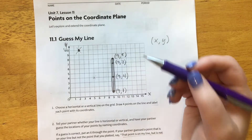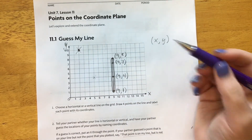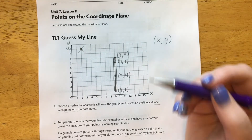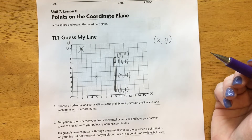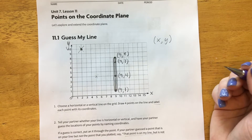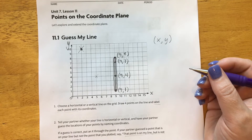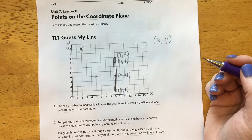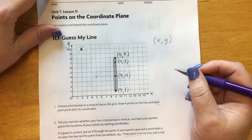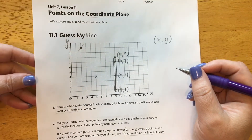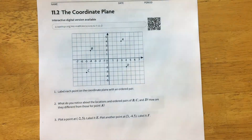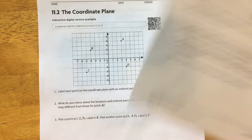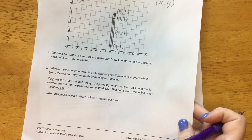You go back and forth, each person giving an ordered pair. The first person to sink their partner's ship wins, just like in Battleship. That's your first activity — go find somebody to play with. Maybe it's your mom, your little brother, your older sister — whoever it is, get some good practice on ordered pairs. Pause this video and go do that now.